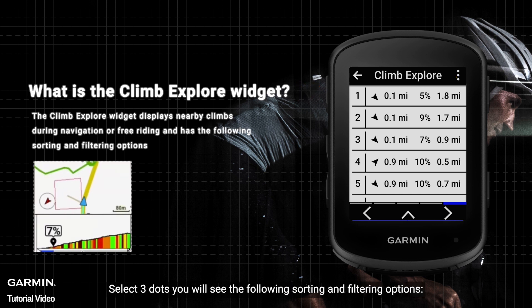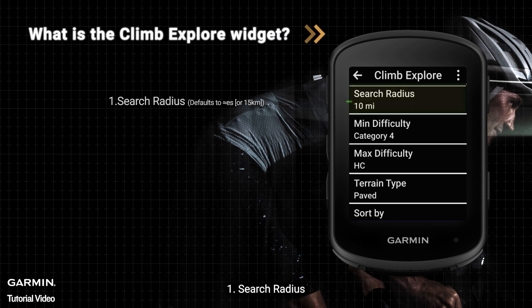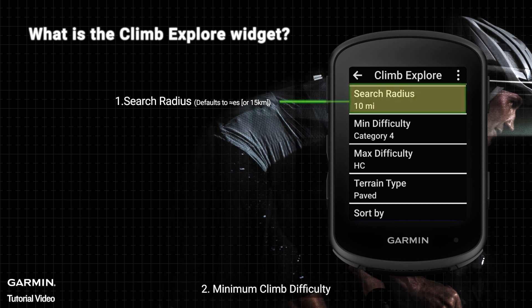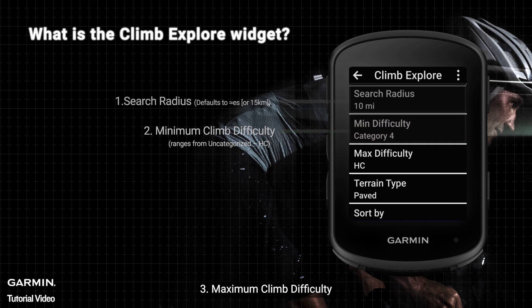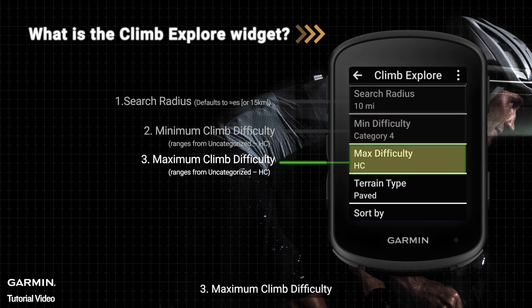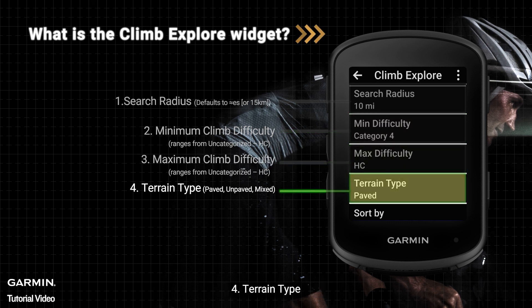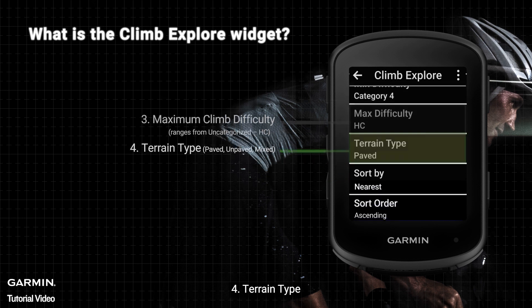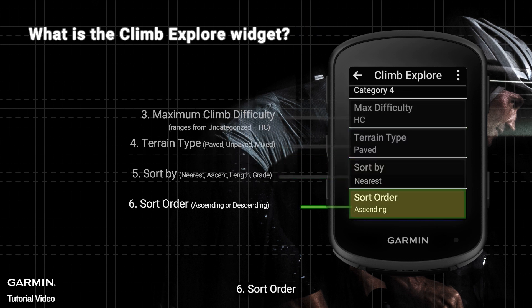Select the three dots and you will see the following sorting and filtering options: 1. Search Radius, 2. Minimum Climb Difficulty, 3. Maximum Climb Difficulty, 4. Terrain Type, 5. Sort By, 6. Sort Order.